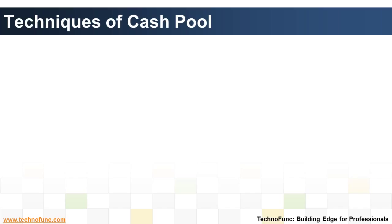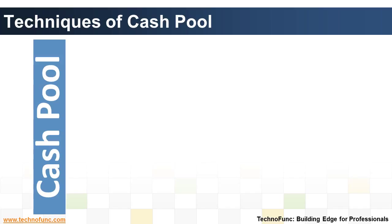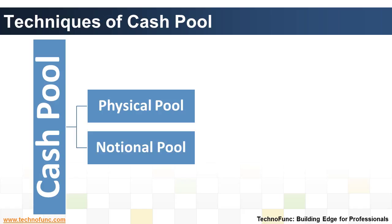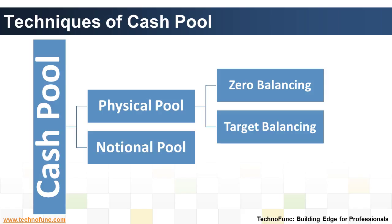Techniques of cash pooling: a cash pool can be physical or notional. A physical cash pool can further be zero balancing or target balancing. Depending on the type of cash pooling arrangement, the participating entities may transfer either their entire cash surplus — known as zero balancing — or cash exceeding a certain surplus level — known as target balancing.